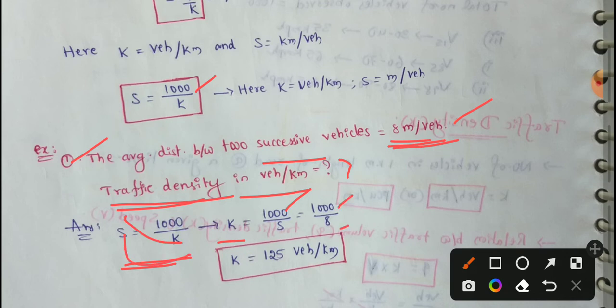So 1000 by S. We have 8 meters per vehicle, so 1000 by 8 equals 125 vehicles per kilometer. So K value is 125 vehicles per kilometer.